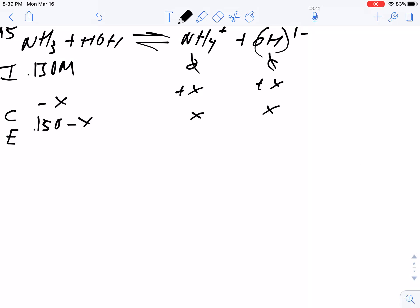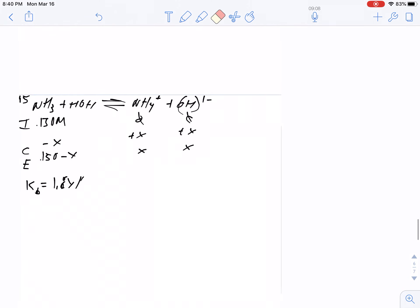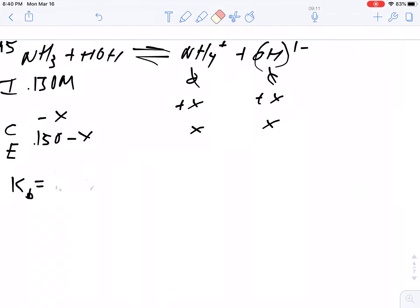The equilibrium expression - they don't give us the Kb, so we have to look up the Kb of ammonia in the table. The Kb of ammonia is 1.8 times 10^-5, and that equals the concentration of ammonium times the concentration of hydroxide over the concentration of ammonia. A reminder: we don't include water because water is liquid.